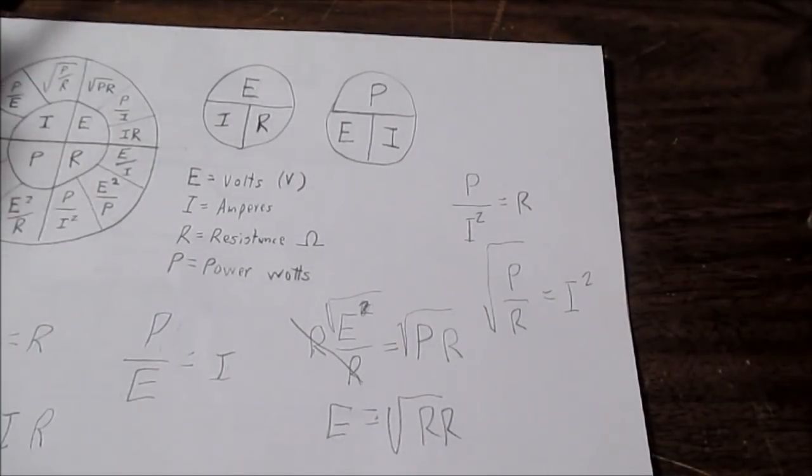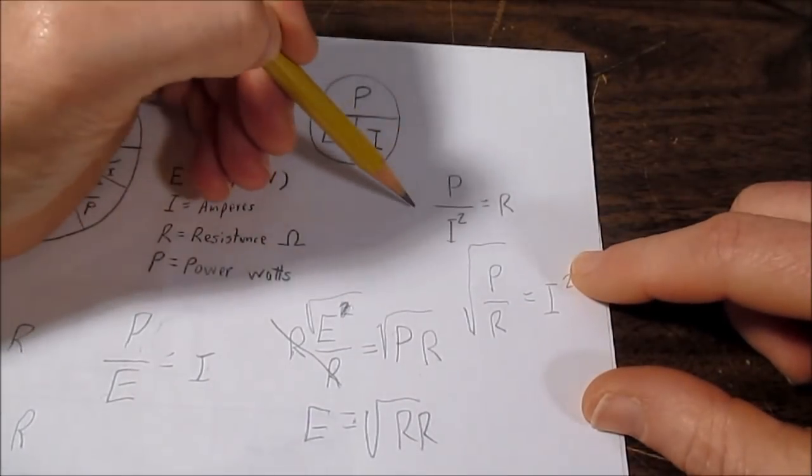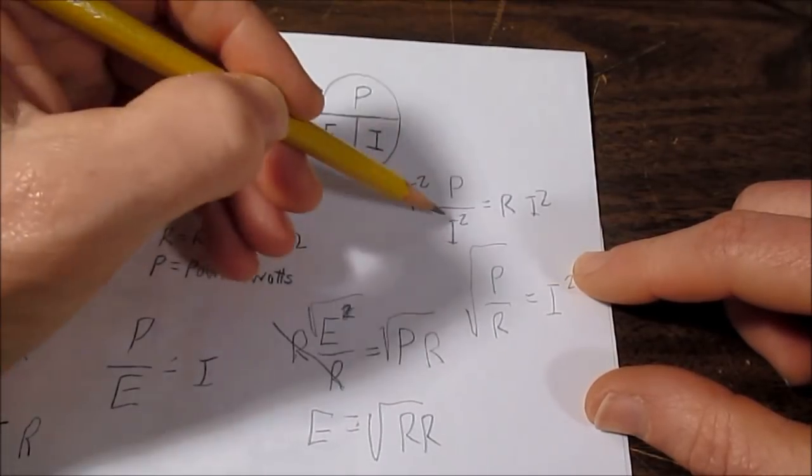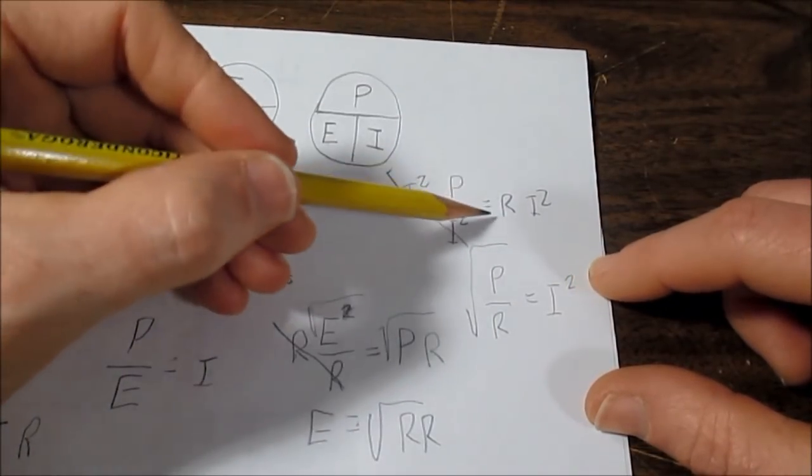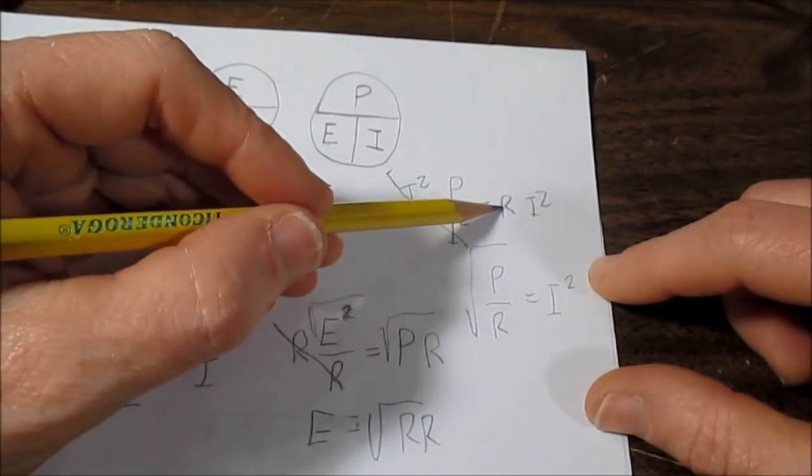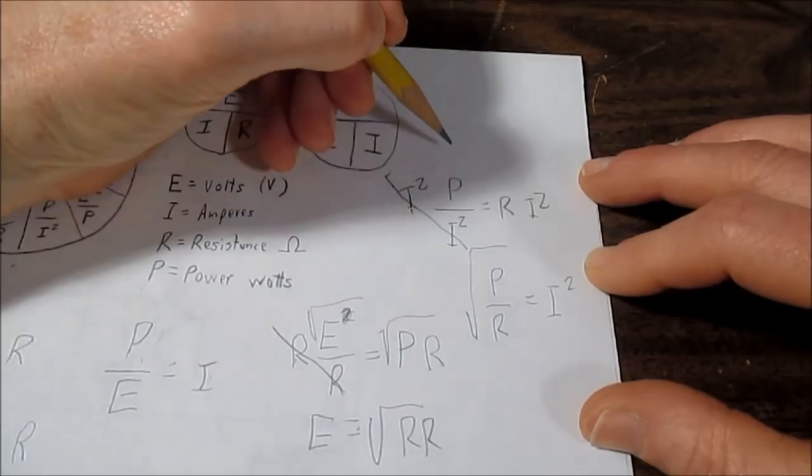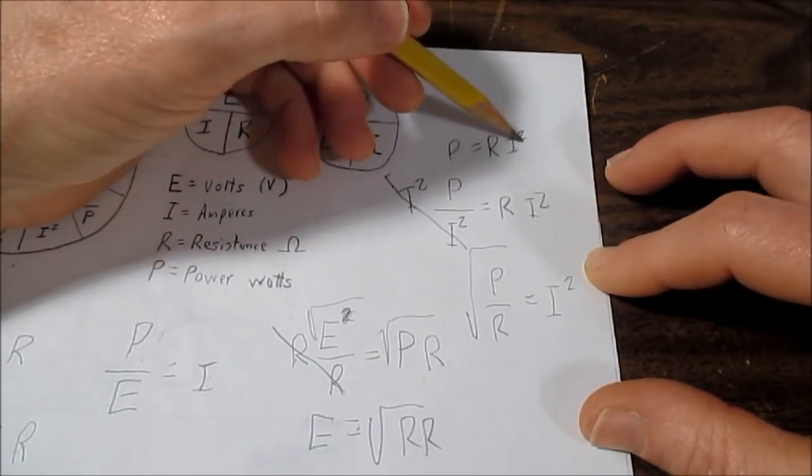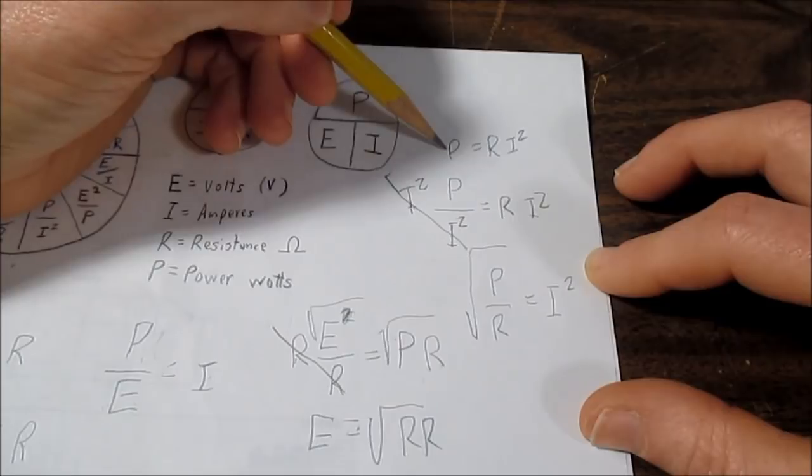And if we're trying to find power, well, we just multiply both sides by I squared. Those cancel out. And we have I squared times R is power. And I'll rewrite that so it's a little more clear. I squared R equals power.